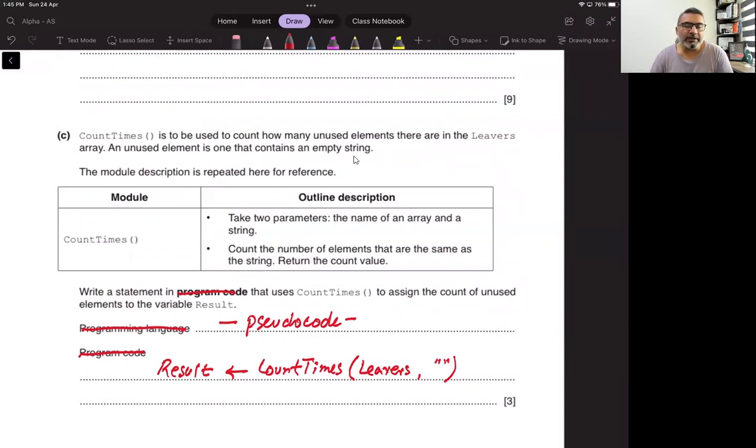An unused element is one that contains an empty string. So empty string is basically double quotation without any space in between. Count times takes two parameters, the name of the array and the string. So this is leavers, the name of the array. Remember when we use array as a parameter, we don't put those brackets. We just take the name, we use the identifier for the array and we just pass it on. When we receive it at that time, we have to use those brackets in parameters. So take two parameters, the name of the array and the string.